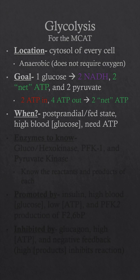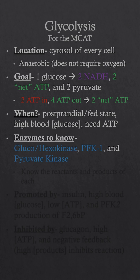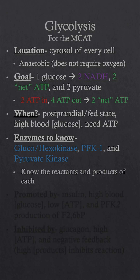Glycolysis mainly occurs in the post-prandial, also known as the fed metabolic state, when we have high amounts of blood glucose and need to be making ATP. There are three enzymes you need to know: glucokinase or hexokinase, PFK1, and pyruvate kinase. You need to know the reactants and products of each of these enzymes.